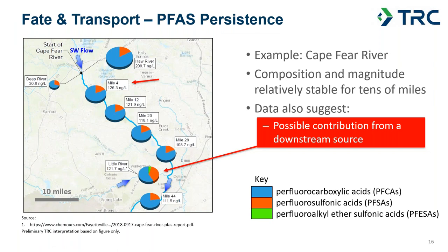This slide illustrates the persistence of PFAS from the Cape Fear River, upstream of the Chemours site. The samples are up-gradient of the site, and you can see consistency of the signature. At mile four, there are 126 nanograms per liter; 20 miles downstream, you see pretty much the same signature and very similar concentrations — hardly any dilution or sorption. Towards the bottom, there may be a little contribution from a downstream source, but the mass of that contribution is not substantial and the overall fingerprint doesn't really change.